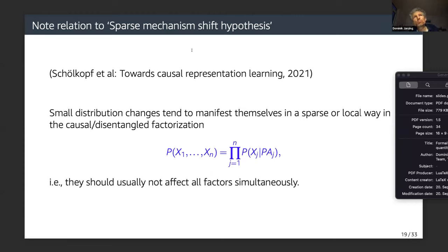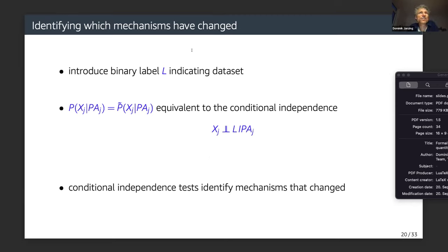This context makes it relevant to mention the sparse mechanism shift hypothesis from the paper 'Towards Causal Representation Learning' by Schölkopf and co-authors. The hypothesis is that small distribution changes tend to manifest in a sparse shift of mechanisms — only few conditionals would typically change. For practical implementation, we introduce a binary label L indicating the dataset, and the statement that a conditional didn't change is equivalent to a conditional independence — which allows us to identify the mechanisms that changed.